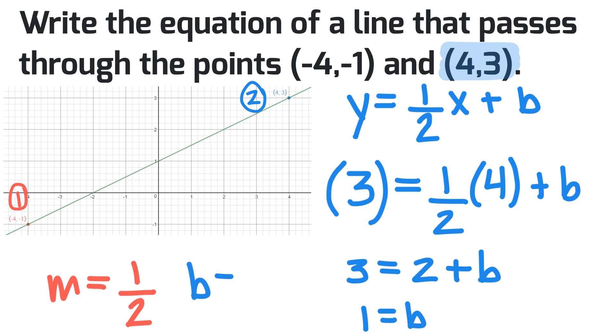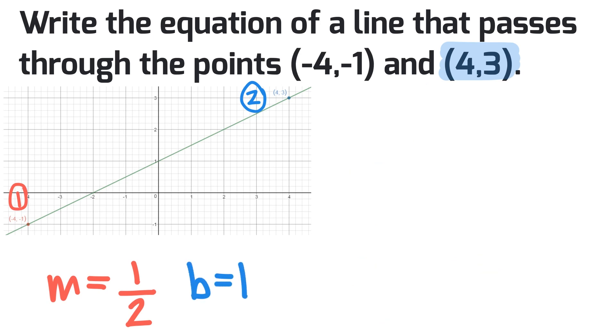Now we take the m value, our slope value, and our y-intercept value, or b. We put that into our equation: y equals 1 half x plus 1.